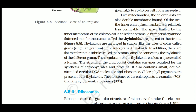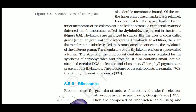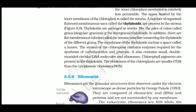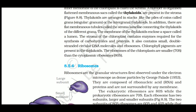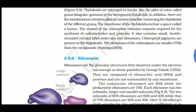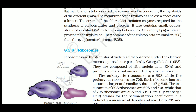Like mitochondria, chloroplasts are also double membrane-bounded cell organelles. Of the two membranes, the inner chloroplast membrane is relatively less permeable. The space limited by the inner membrane is called stroma. The organized flattened membranous sacs present in the stroma are called thylakoids - each coin is a thylakoid. Thylakoids are arranged in a stack like a pile of coins, called grana (singular: granum). Flat membranous tubules connecting thylakoids of different grana are called stroma lamella.